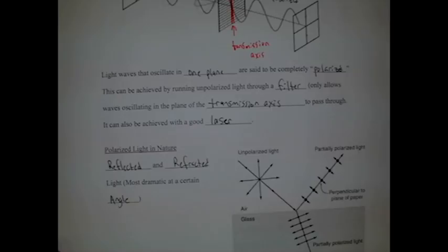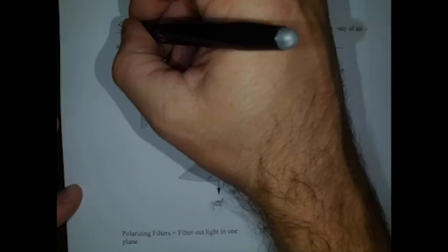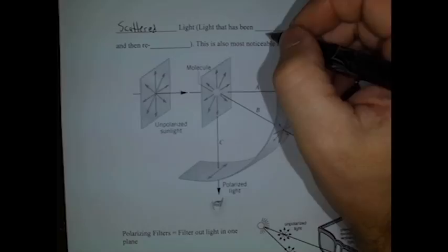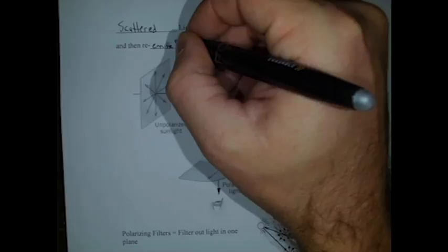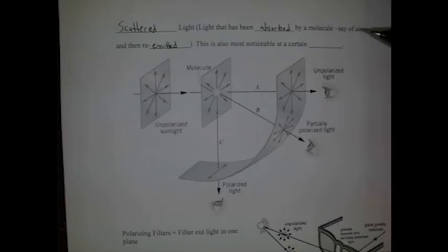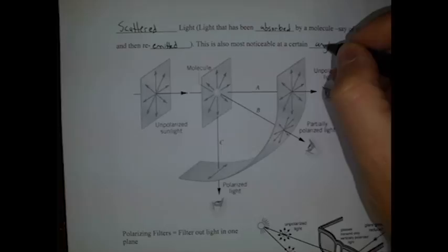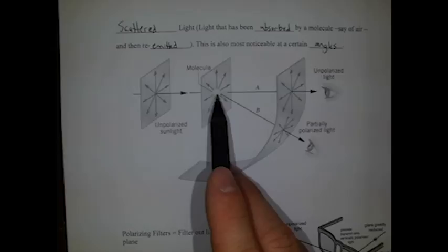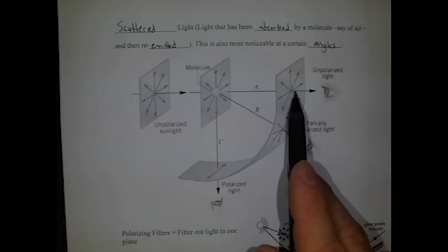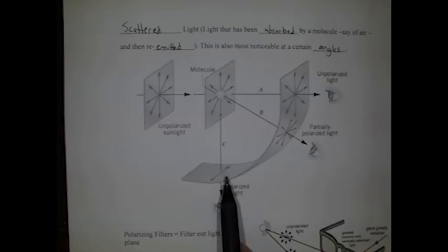Another case in nature where we might find polarized light naturally is in what's called scattered light. Scattered light is when light has been absorbed by a molecule, say of air, and then re-emitted. So the molecule takes in that energy of the photon for a moment, and bumps an electron up a level, and then it drops back down and re-emits the light. And again, this is most noticeable at certain angles. So this picture, I think, illustrates that pretty well, so this could be like sunlight traveling through the atmosphere. The sunlight travels through the atmosphere, it hits a molecule in the air, say a nitrogen, N2 molecule. That photon gets absorbed, and then it gets re-emitted. And ones that get re-emitted forward tend to still be unpolarized. But ones that get emitted downward, below, might have a polarized nature to them.